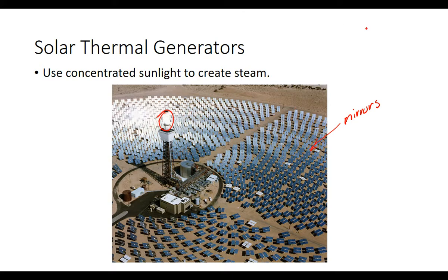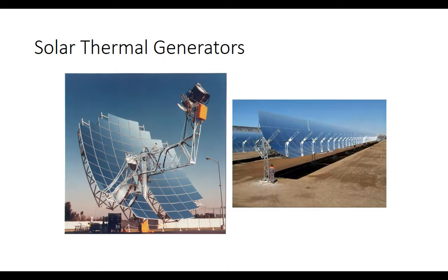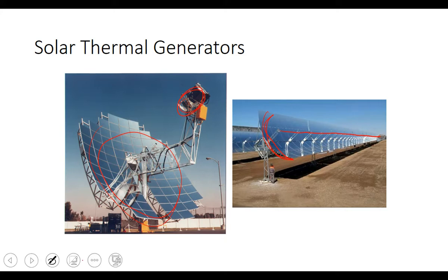Also worth noting: solar thermal generators run at 30–40% efficiency, which is still higher than a regular solar panel at 15–20%. Here are some smaller-scale examples — one like a satellite dish focusing mirrors onto a thermal generator, and a parabolic trough with a water line running down the middle connected to a steam engine. Both are also cool applications of the same mirror-and-heat concept.